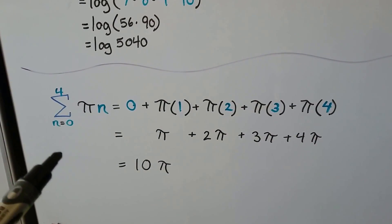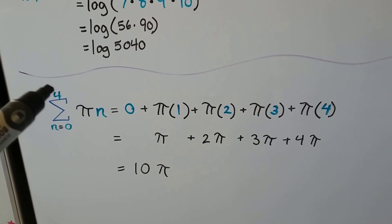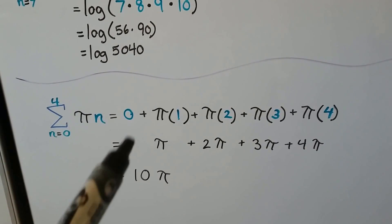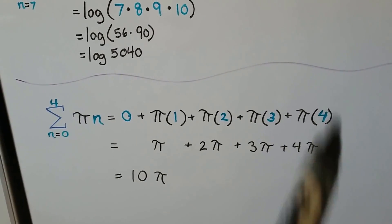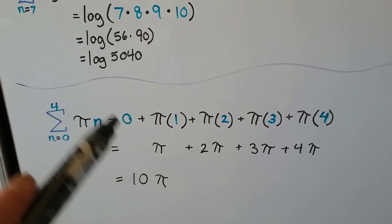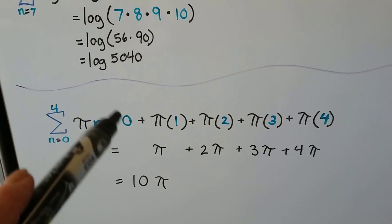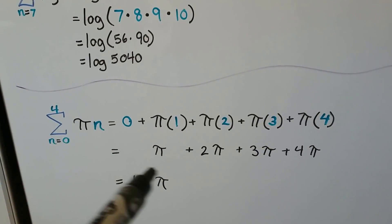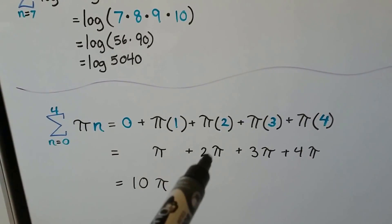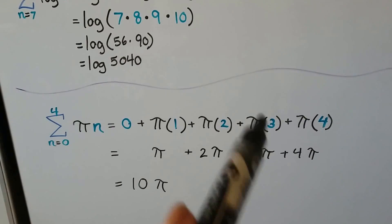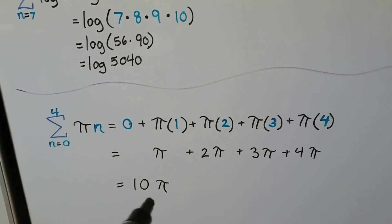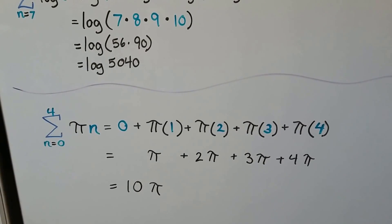We can do it with pi. We're going to have 4 terms starting with n equals 0. Going 0, 1, 2, 3, 4 — we don't need the 0, so we just have pi, then 2 pi, 3 pi, 4 pi. When we add these up, we get 10 pi.